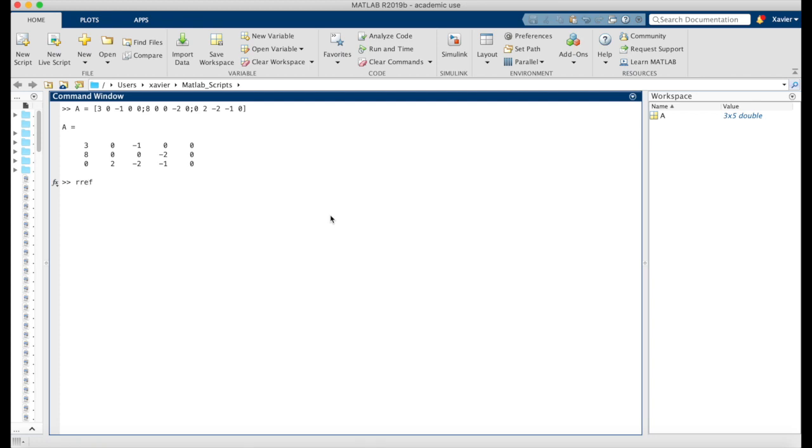And then we're going to get the reduced echelon form matrix after we put in the matrix A, or the variable A in this case, into the RREF function. And it's going to give us our row-reduced matrix. And again, the row-reduced matrix that we've just gotten with MATLAB is going to correspond to equation 5.